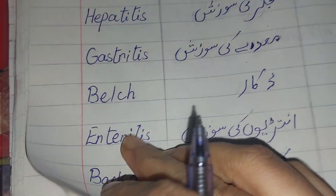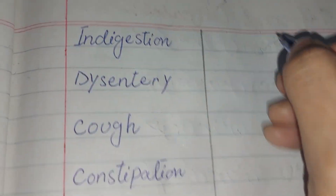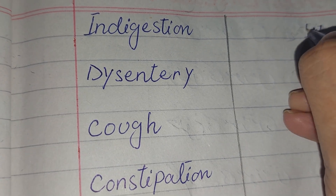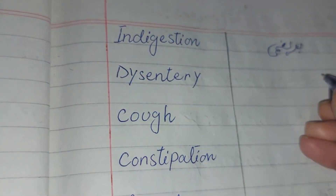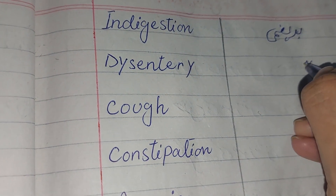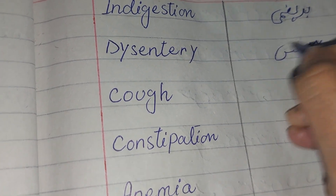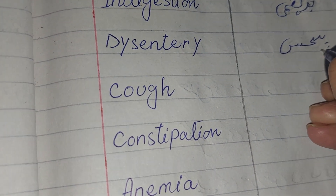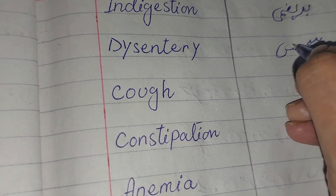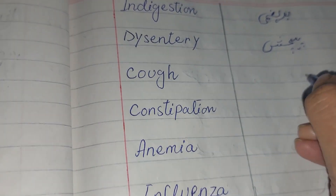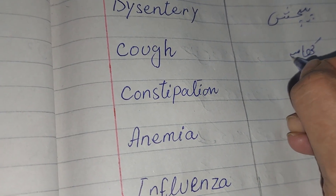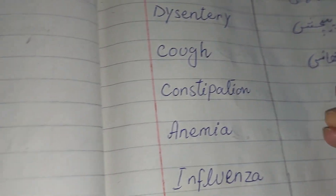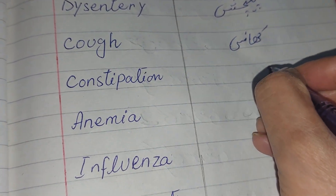Indigestion — bad-hazmi. Dysentery — pechish. Cough — khansi. Constipation — qabz.